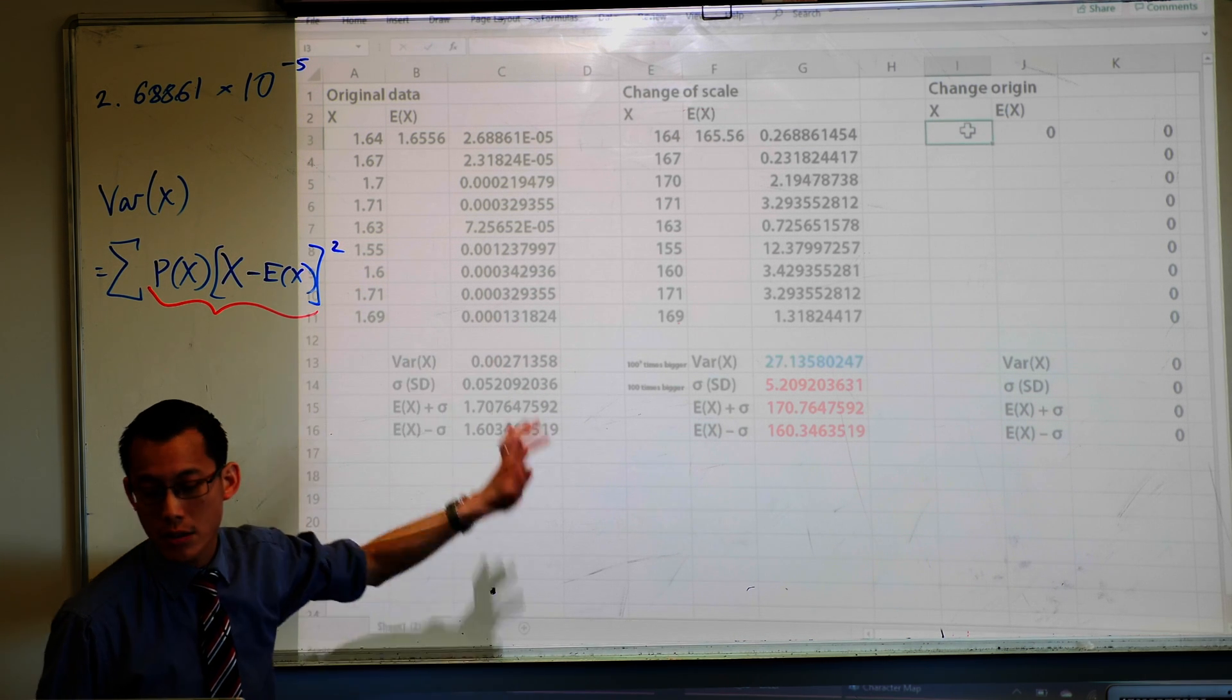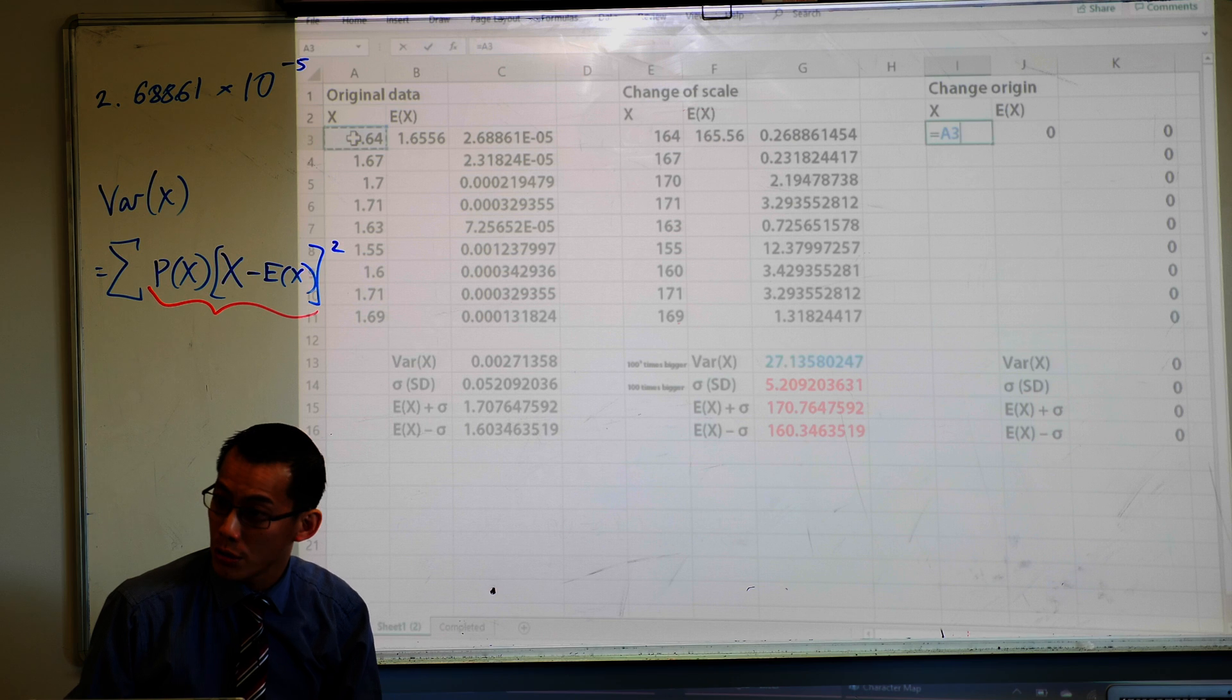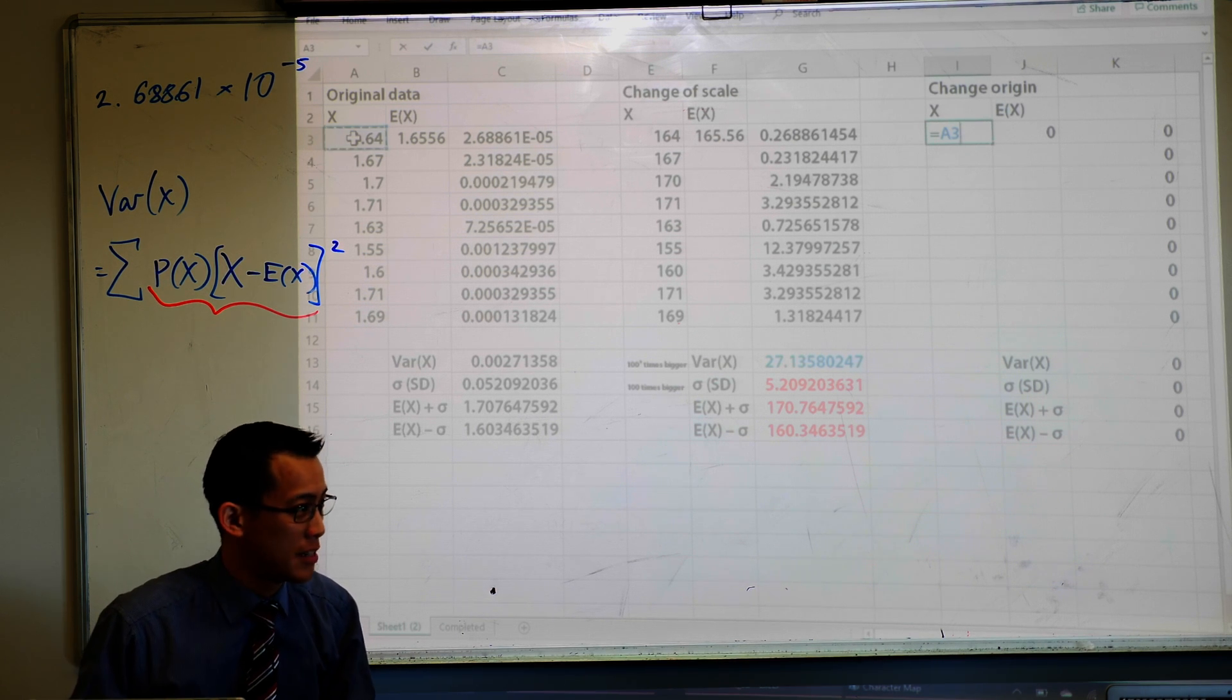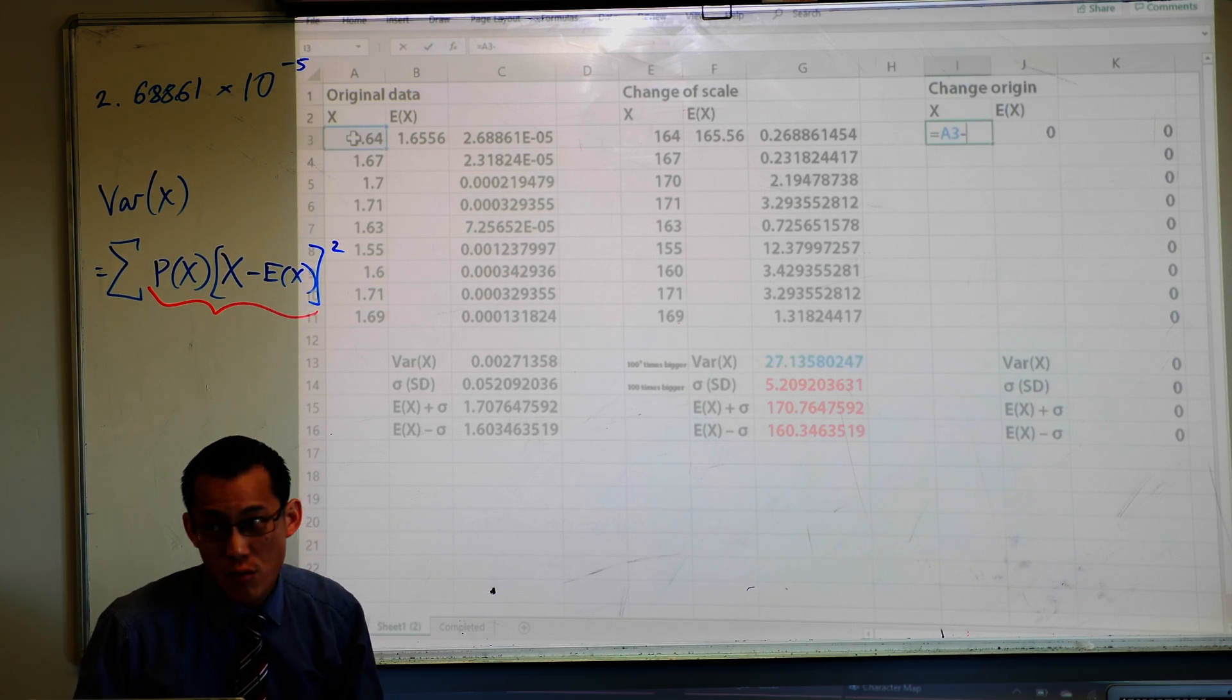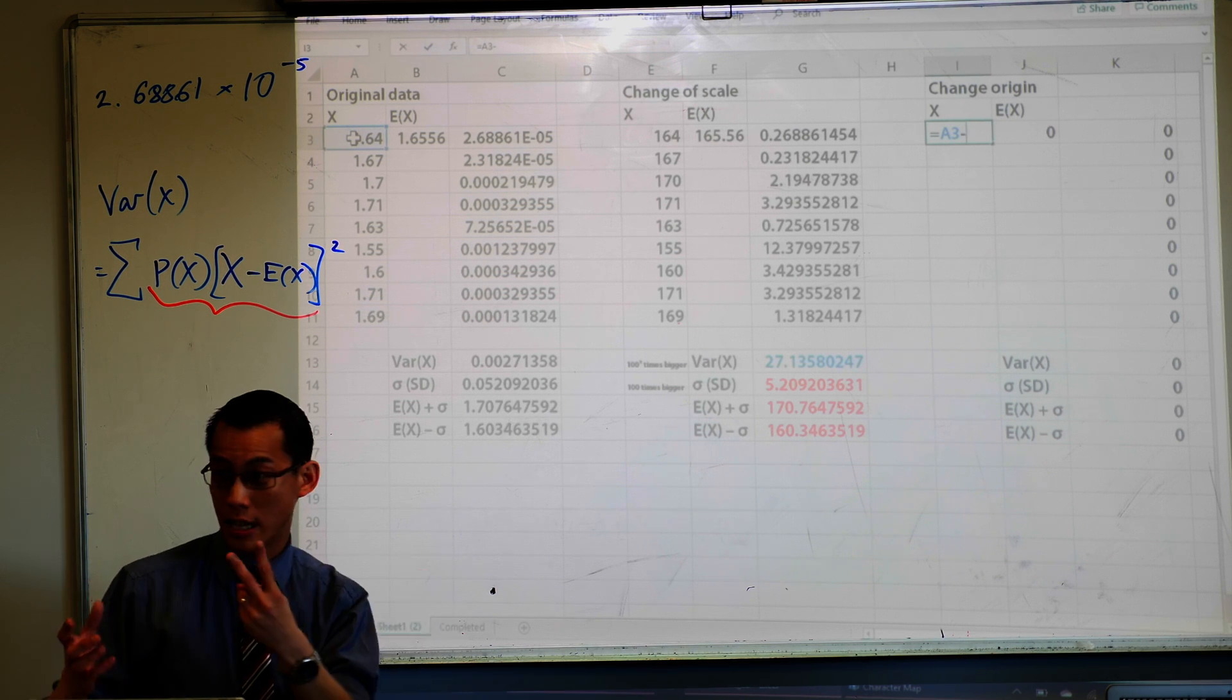Now my original data is in meters so I'm not going to do the original number take away two. I'm going to do the original number take away 0.02, yeah? That would be the effect of two centimeters.